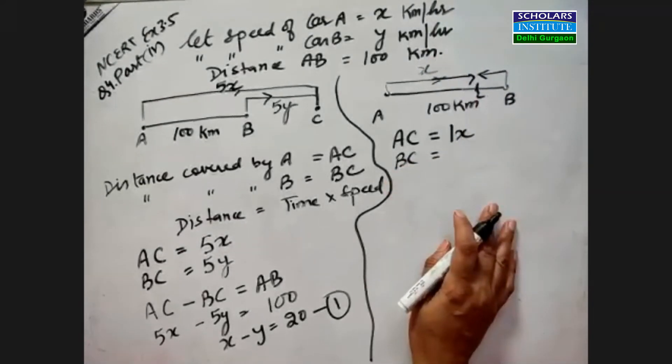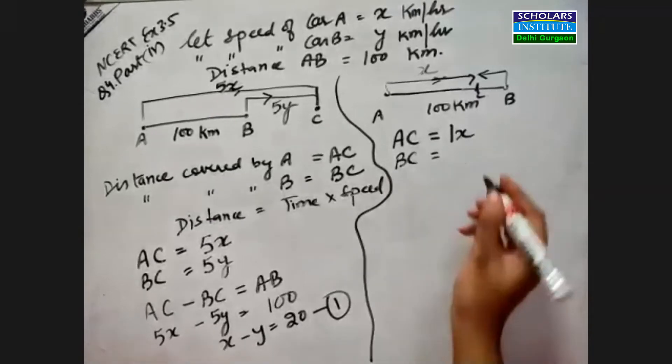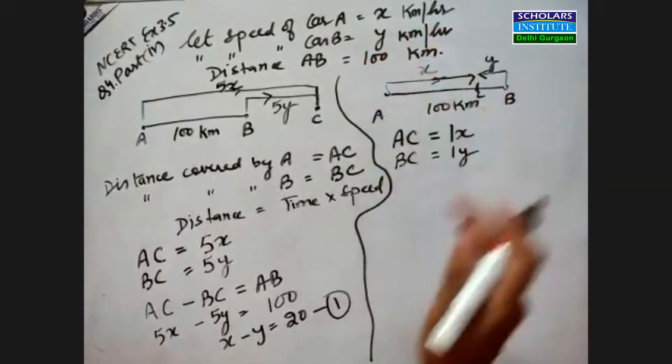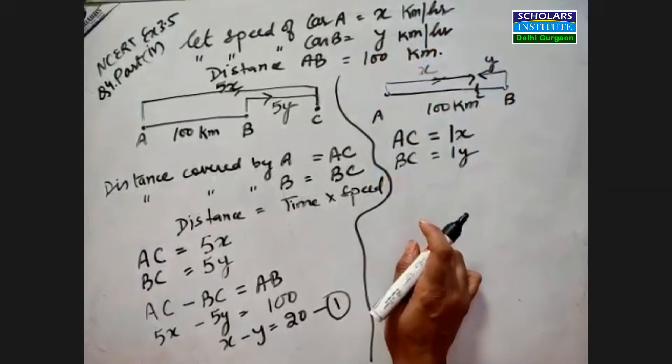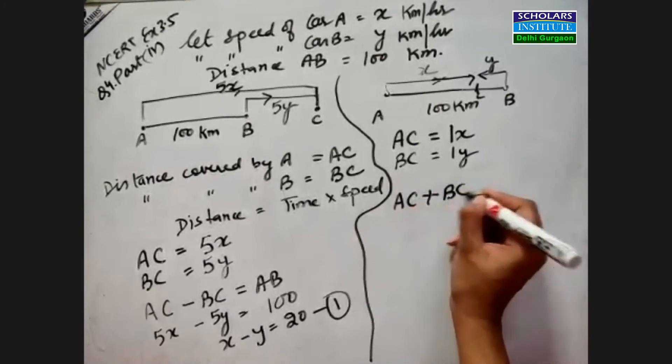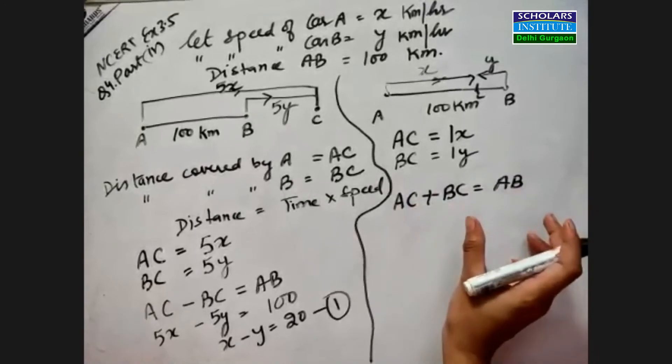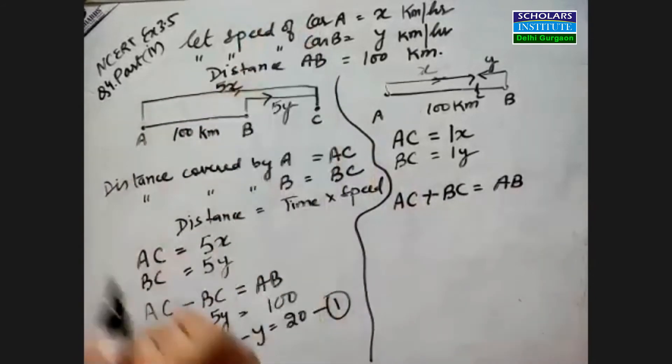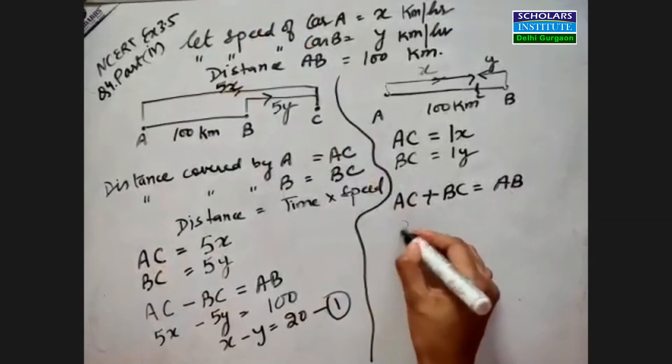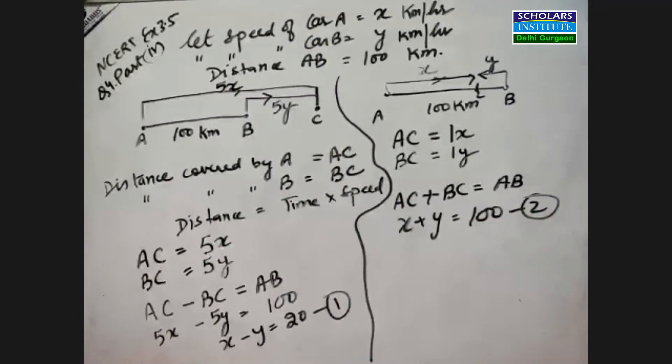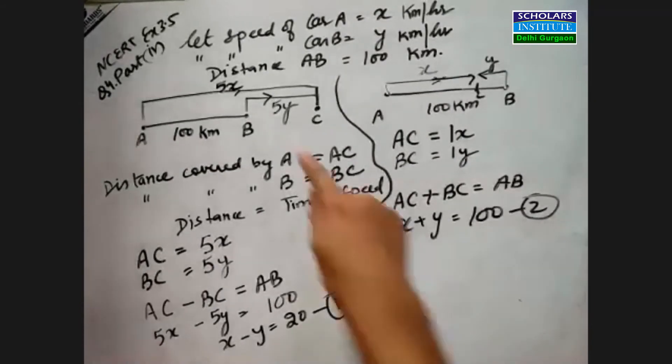Can you make an equation here? AC plus BC equals AB. AC is x, BC is y, so x plus y equals 100. Note that here we add them because AC plus BC makes AB when traveling towards each other, whereas in the first case AC minus BC equals AB. So x plus y equals 100. This is the second equation.